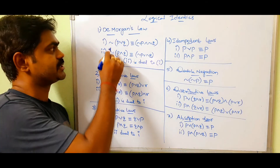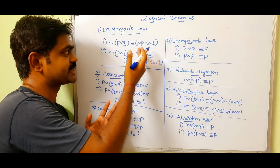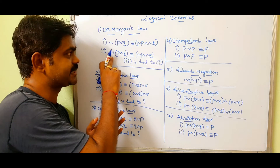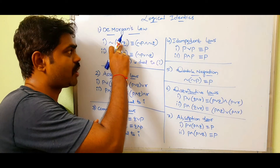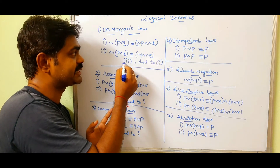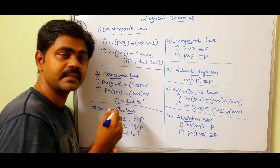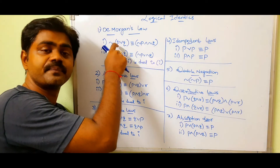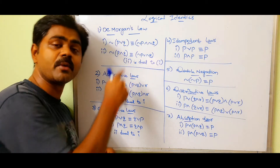So negation of P OR Q equals negation P AND negation Q. The second form is the dual of the first — we changed OR to AND. So formula 2 is dual to formula 1. This is De Morgan's law.